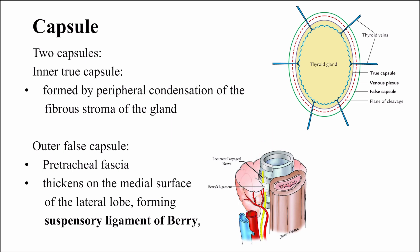When we remove the thyroid gland during surgery, the line of incision should be between the true and the false capsule. The reason we incise here is to prevent hemorrhage, as lots of venous plexuses are present in the gland itself. So we remove the thyroid gland by taking out within the true capsule.